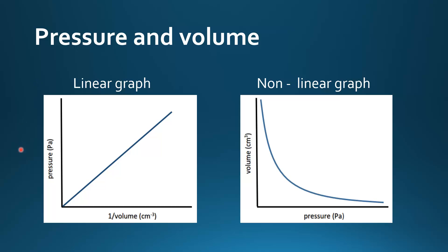Next we look at some graphs of pressure versus volume. The first is pressure versus 1 over volume — 1 over V — and as you can see you get a linear graph, which is a straight line. If you plot volume against pressure then you have a non-linear graph, which is a curve.